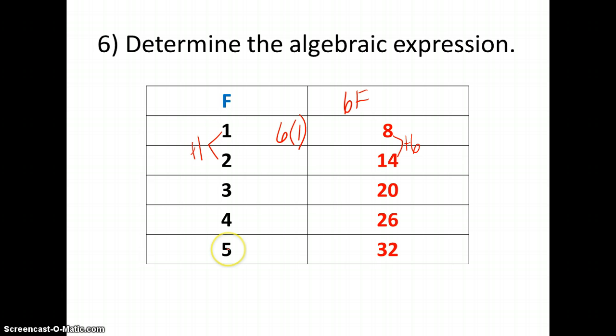Let's substitute F for some of our values. 6 times 1 is 6, but I need 8. What do I need to add or subtract from 6 to get 8? 2. Let's see if it works with the next one. 6 times 2 is 12, plus 2 gives me 14. 6 times 3 is 18, plus 2 is 20. 6 times 4 is 24, plus 2 is 26, and 6 times 5 is 30, plus 2 is 32.